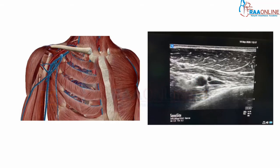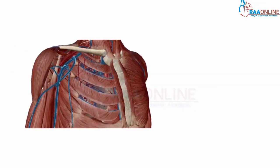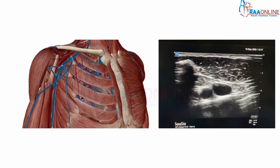As the ultrasound probe is moved medially, the cephalic vein drains into the axillary vein. Moving further medially, the clavicle comes into picture. The axillary artery tries to disappear under the clavicle, and the axillary vein here is larger because of cephalic vein drainage. They rest on the second rib, and to the right of the rib we can see the pleura.